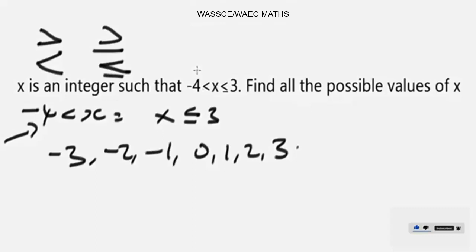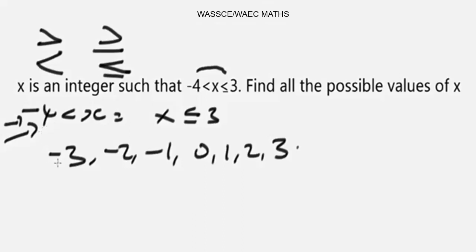If you interpret the inequality -4 < x ≤ 3, this tells us that x is greater than -4, meaning -3 is greater than -4. So you start with -3 and not -4.